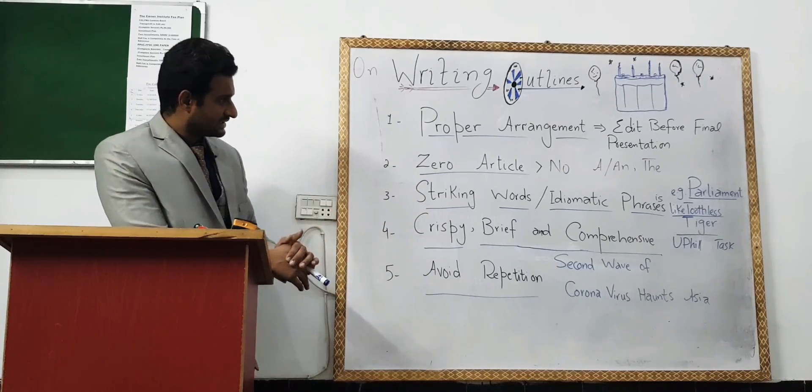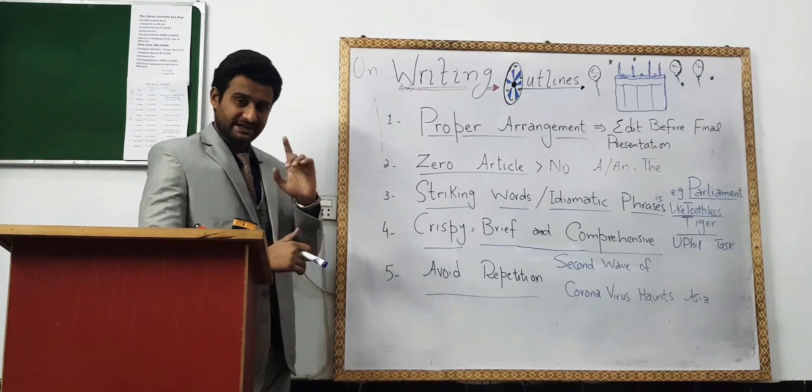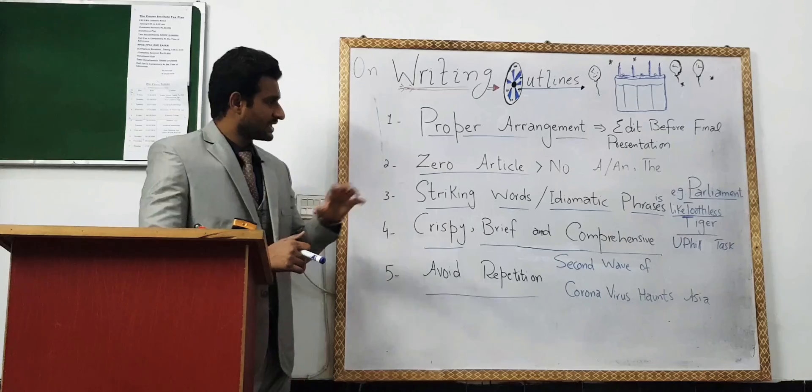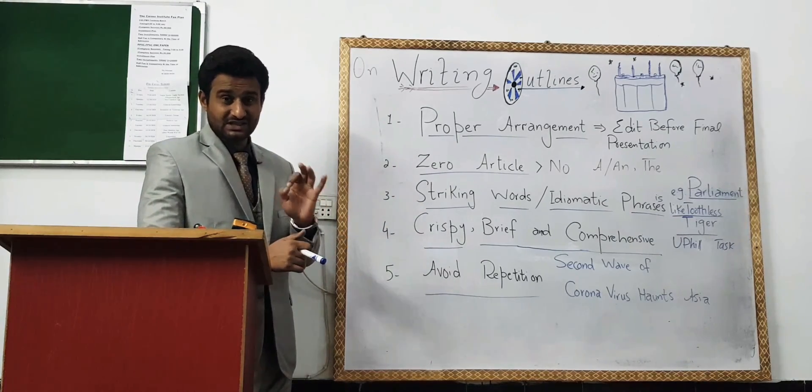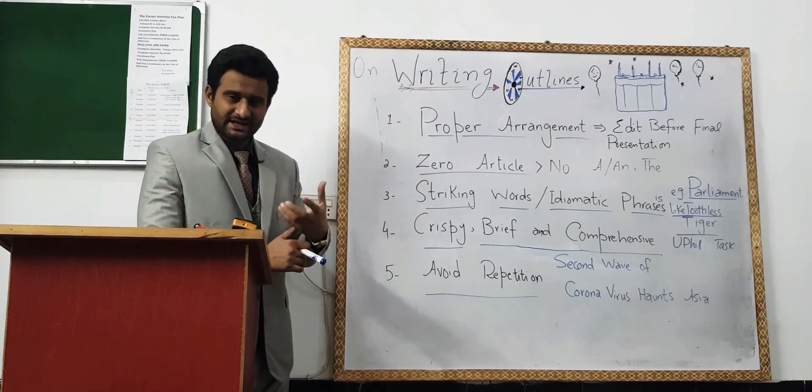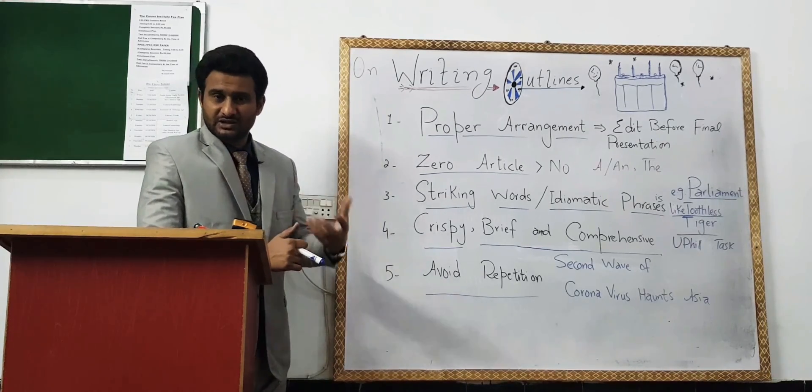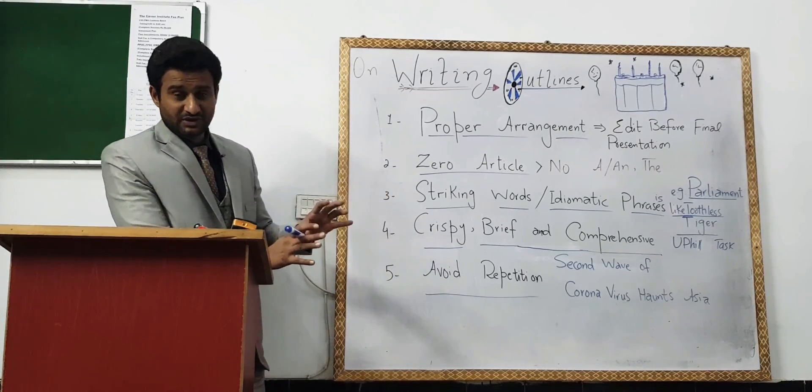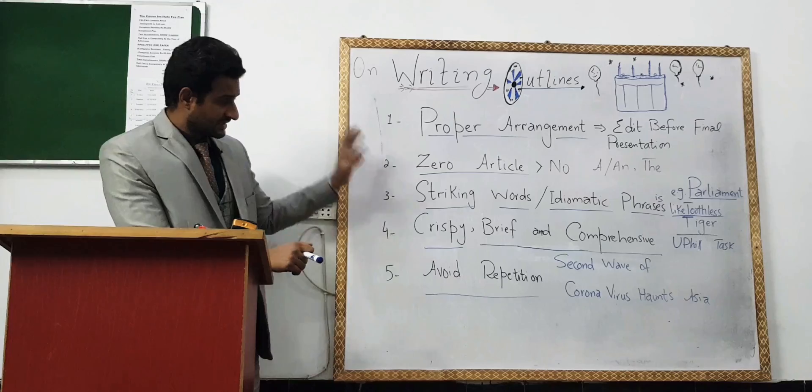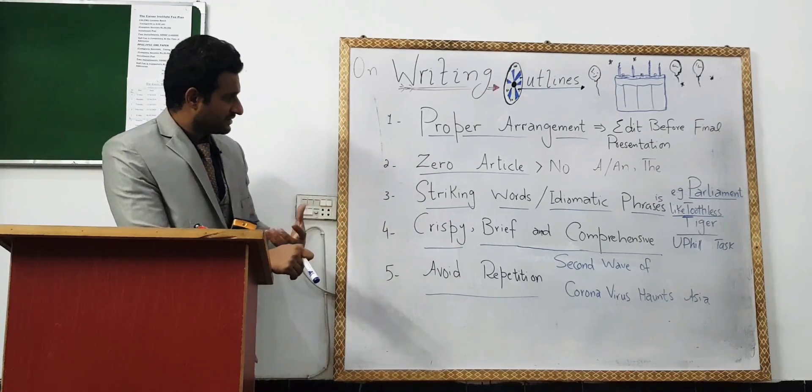So basically, these are the five principles that if you adopt, if you follow these principles, you will be able to write a good outline. And again, I would like to say in the end that outline is the keystone, is the cornerstone, is the key feature that will guarantee, that will ascertain or that will decide whether your essay is going to be passed or not. So you please, you should focus - outline is a very important segment of my book. Inshallah, in detail in my chapter in my book, you will get more information.